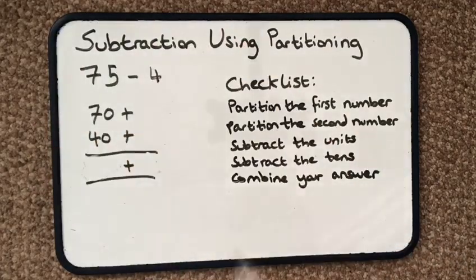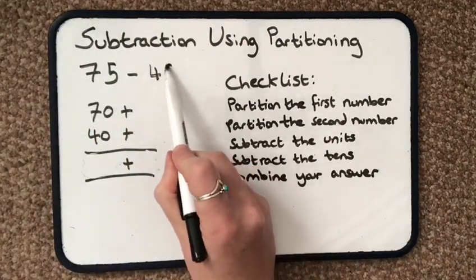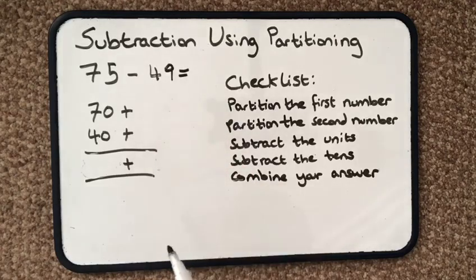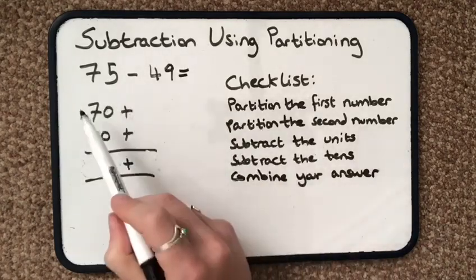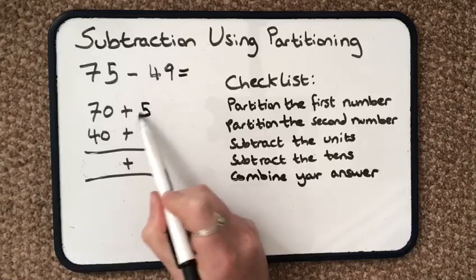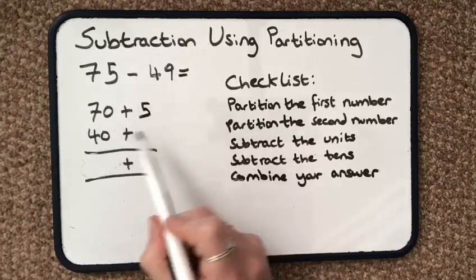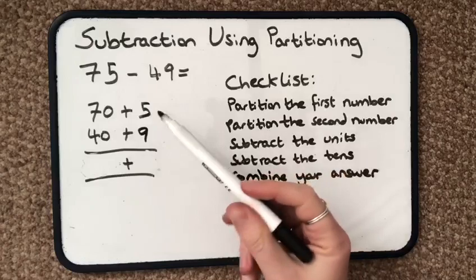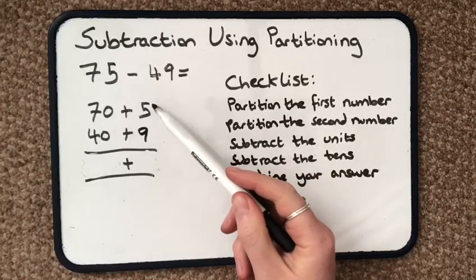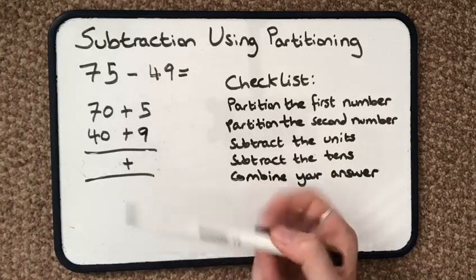So imagine I had 75 take away 49 this time. So I break up that first number, 70 and 5. Break up the second number, 40 and 9. Subtract the units. I always start with that top number, 5 take away 9.